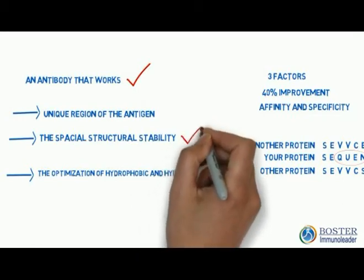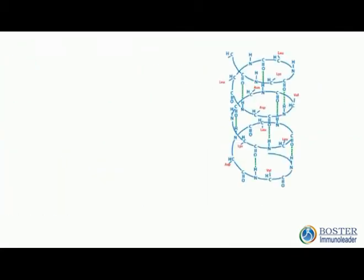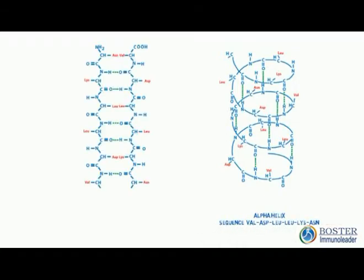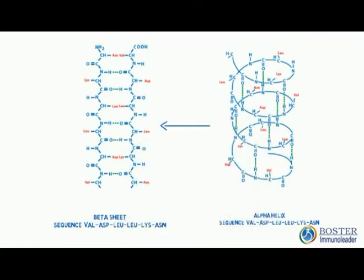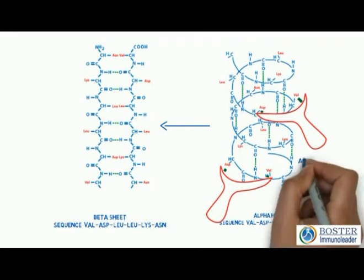Now let's look at the first one. A protein is not a stable structure. Many of its domains can twist and fold in different ways and thus possess different immunogenicities. For example, the same amino acid sequence can form an alpha helix, beta sheet, or simply a straight line that can swing freely.